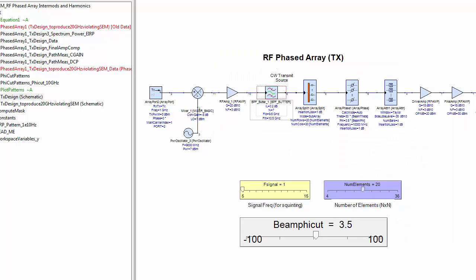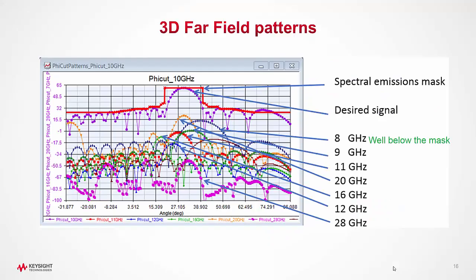Then when we simulated and plotted the spectral emission mask along with all the phi cuts of signal and spurious, we can easily see that most of the spurious is pushed well below the spectral emissions mask. This indicates that we can very effectively simulate, identify, and rectify the spurious emissions in undesired directions that are violating the spectral emissions mask.